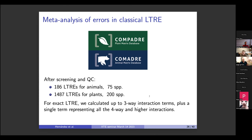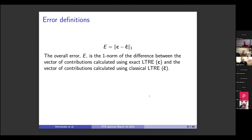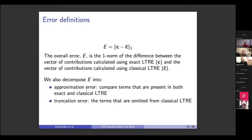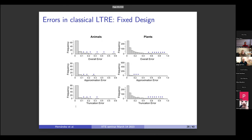For exact LTRE, we calculated up to three-way interaction terms, plus a single term representing all four-way and higher interactions. For this meta-analysis, we define the overall error E as the one-norm of the difference between the vector of contributions from exact LTRE and from classical LTRE. We decompose this into approximation error — from mismatch in terms present in both methods — and truncation error, from terms omitted from classical LTRE that we calculated in exact LTRE. For fixed design LTREs, animals are on the left, plants on the right; overall error in the first row, approximation error in the middle, and truncation error along the bottom.